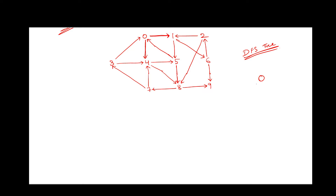From node 0, we have two outgoing edges which go to vertex 1 and vertex 4. We are supposed to take the numerical order into consideration, so we will be taking the outward edge to 1. From 1, there are two outgoing edges — one goes to 5 and the other goes to 6. We will be exploring 5 considering numerical order.